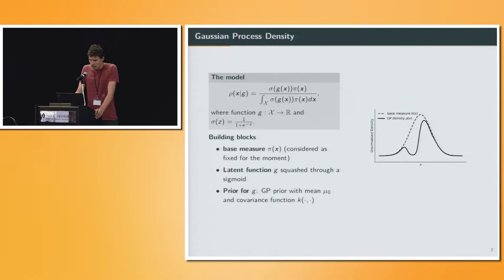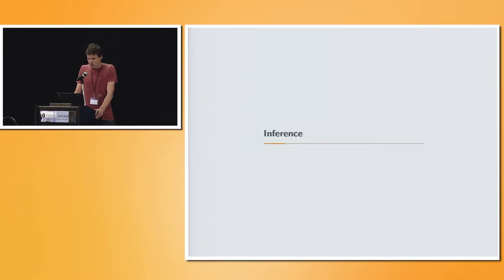Since we're Bayesian, we need to put a prior over this latent function, which is not surprisingly a GP prior with a mean mu zero and a covariance function k. Throughout this talk, I will assume it's an RBF kernel, but we are not restricted to this. Now the question is, having our observations from this model, can we recover the density rho again? This brings us to inference.